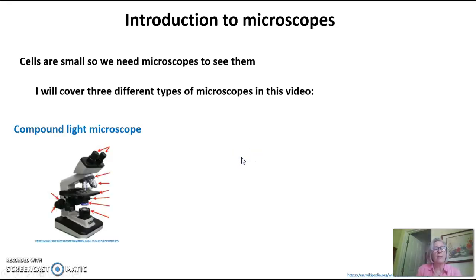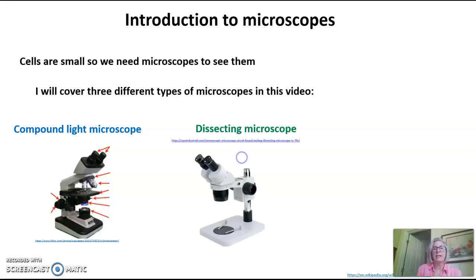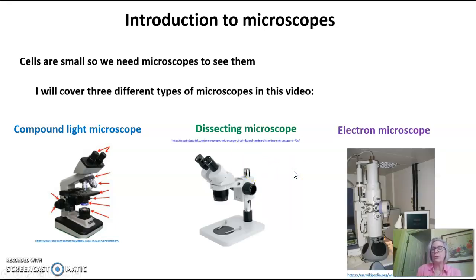The first is called a compound light microscope. The next is a dissecting scope. And the third is called an electron microscope. We'll talk about each one of these and their advantages and disadvantages individually.